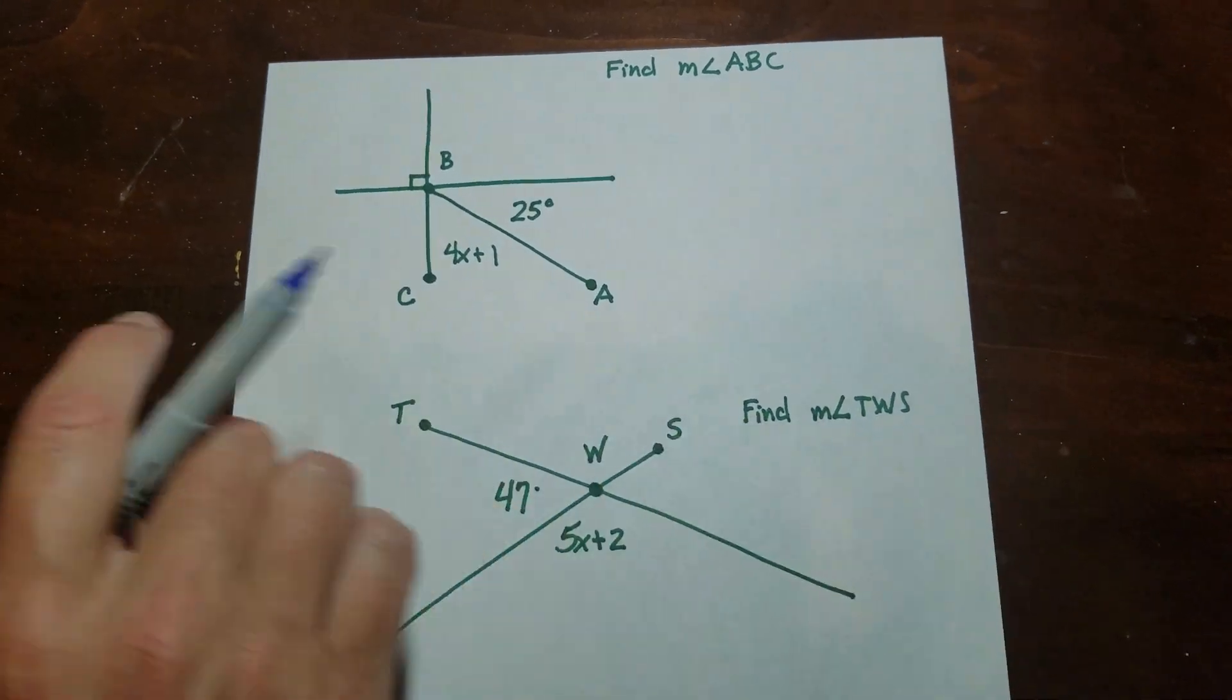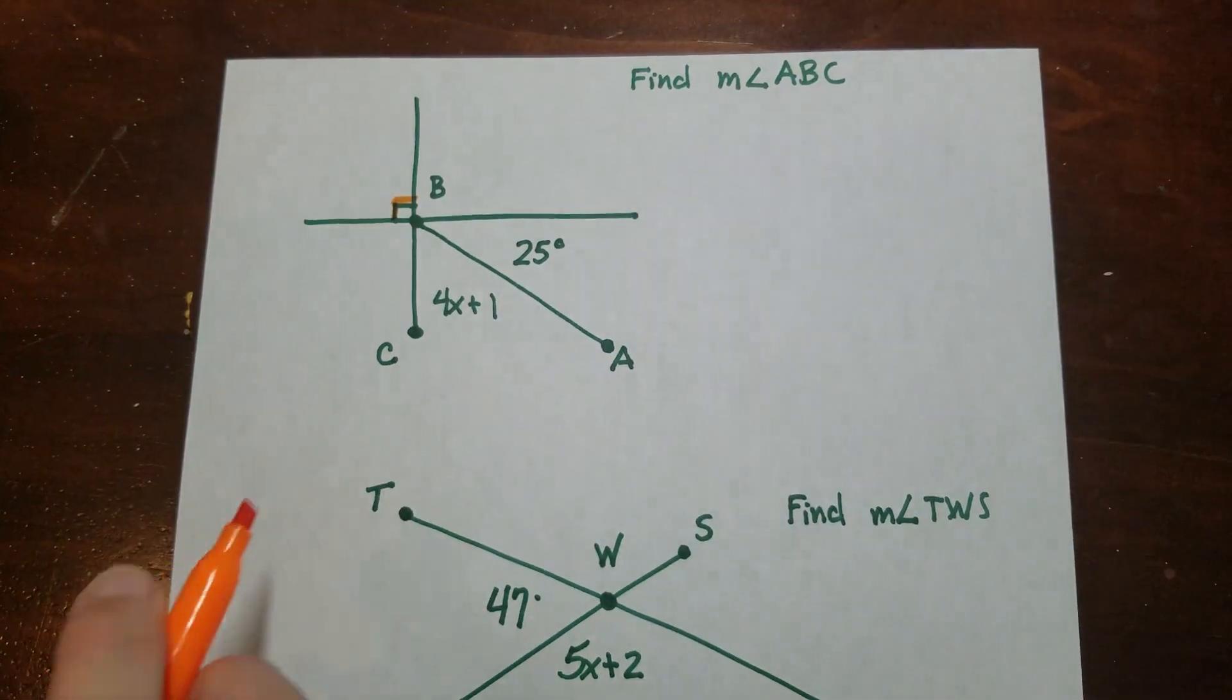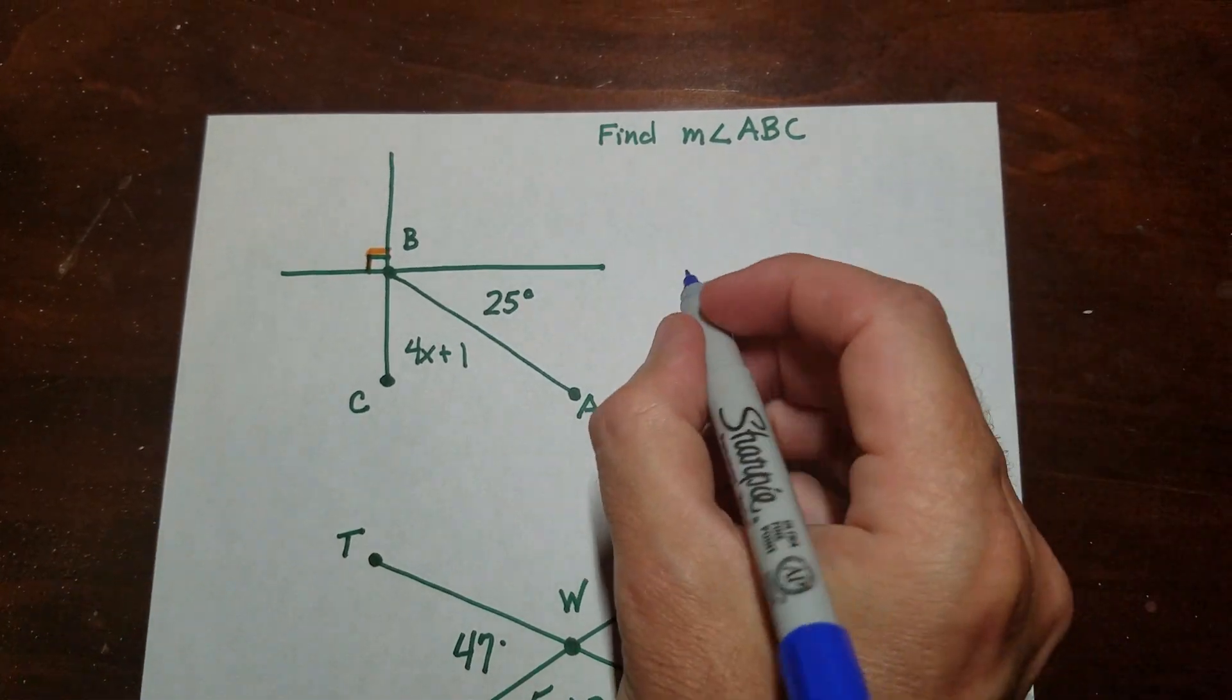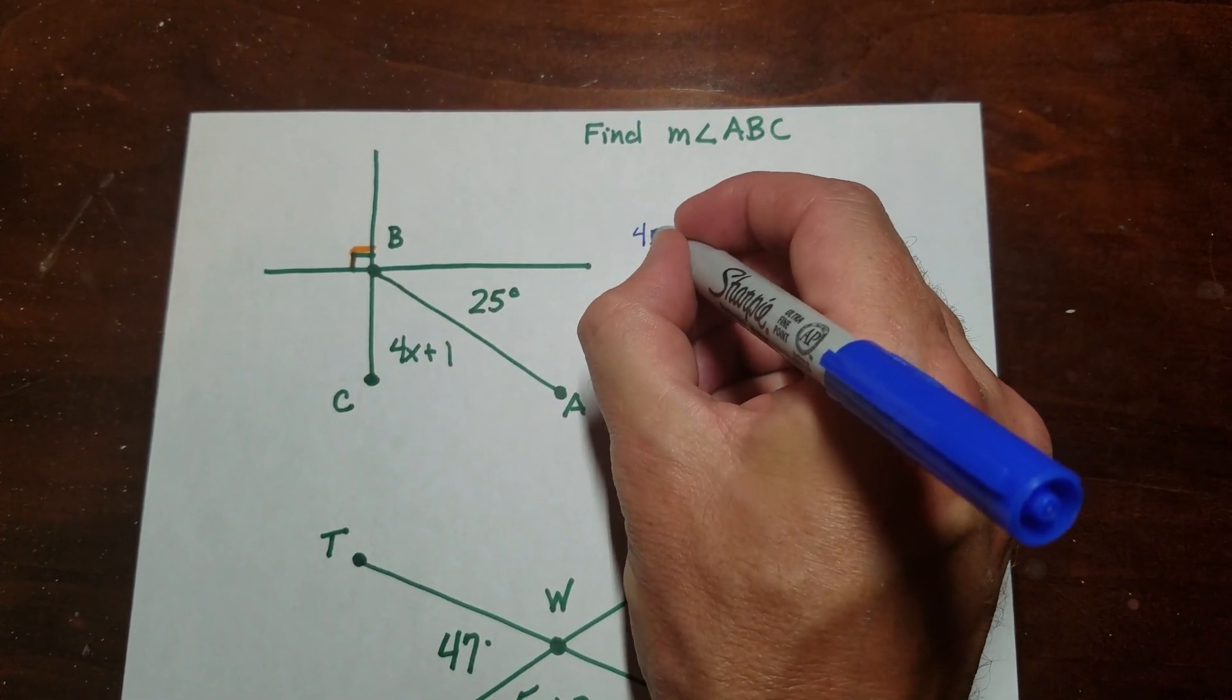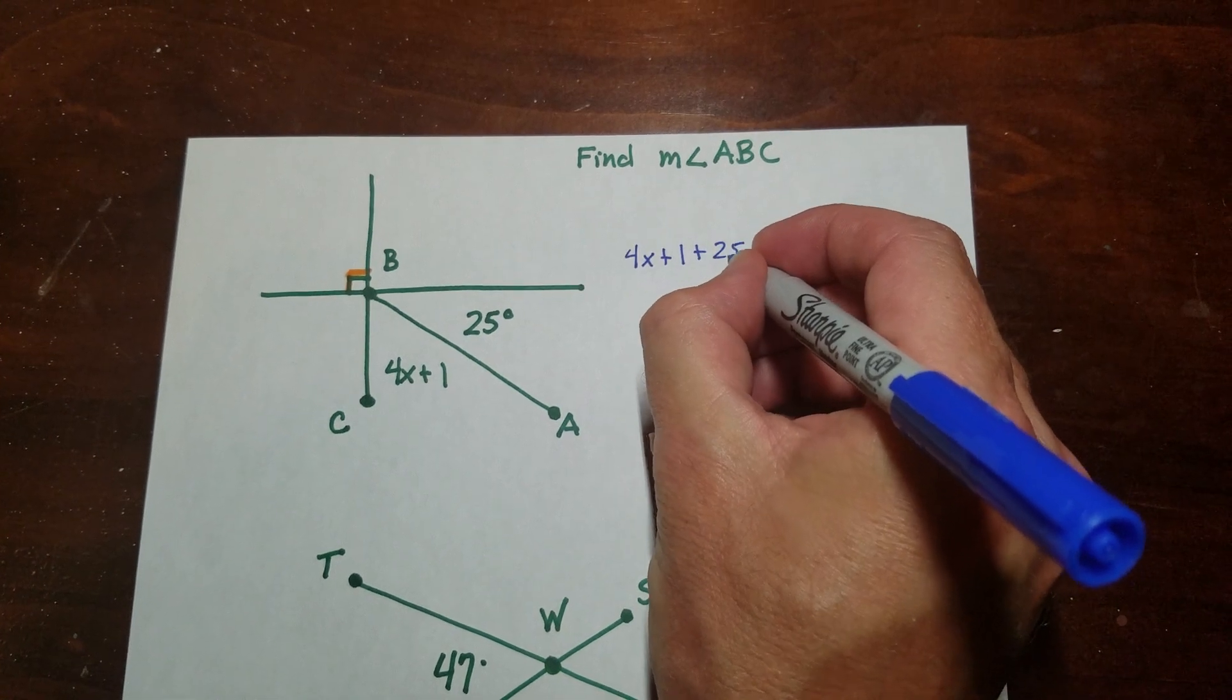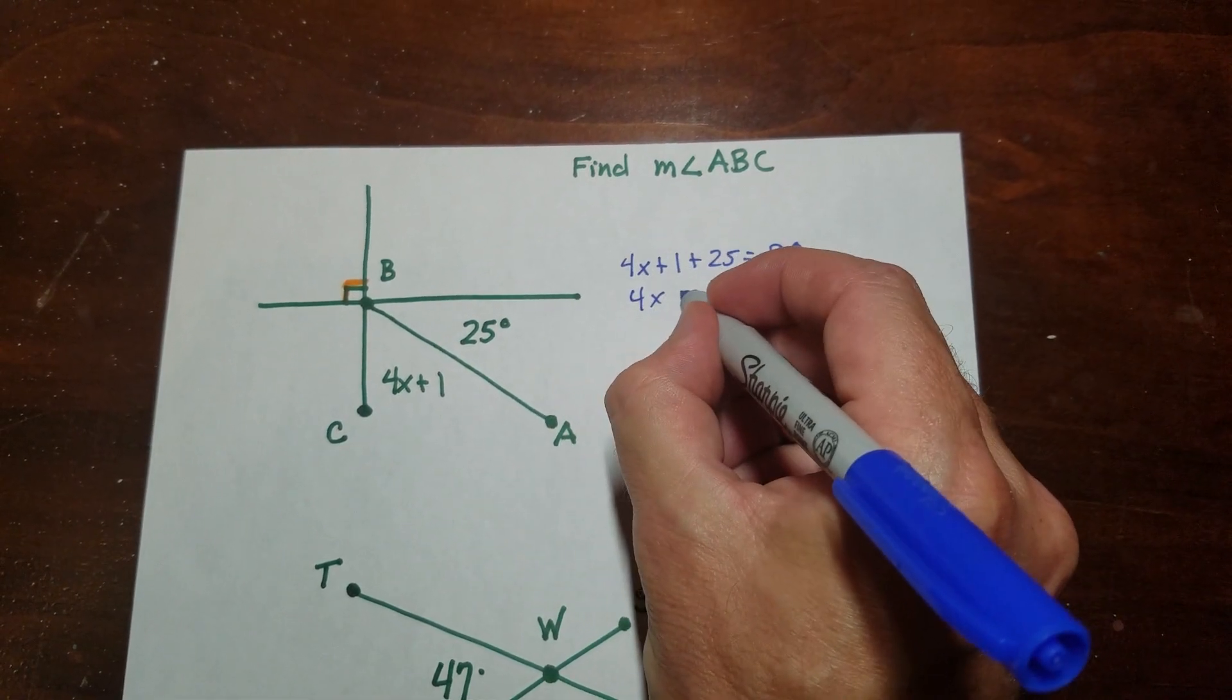So then I have a couple more here. All right, so this one's got the little 90 degrees in here. So I'm thinking, okay, this is some kind of complementary thing going on. So these two make a 90 degree angle. So I'm going to set up my equation.